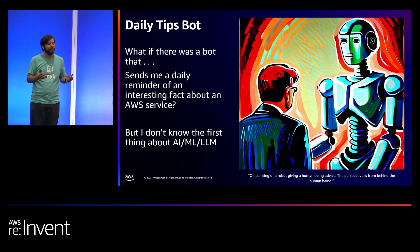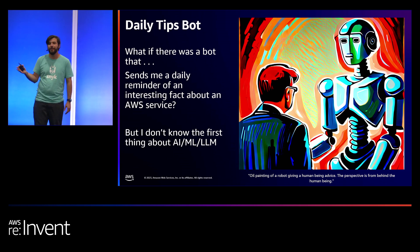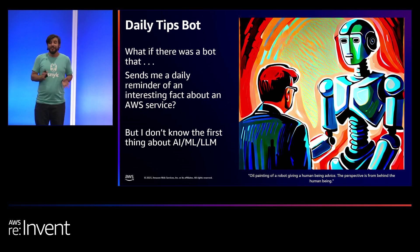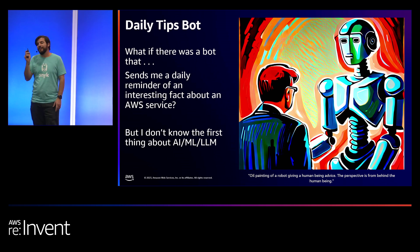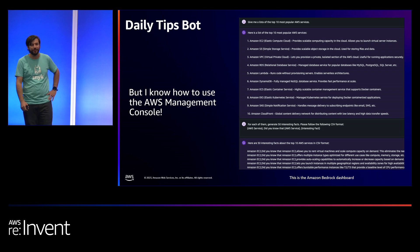I thought, what if there was a bot that sends me a daily reminder of an interesting fact about an AWS service? A daily reminder about an existing AWS service can be helpful — not just for me, but hopefully for the average AWS builder and the community. The challenge though, like I said, is I don't know the first thing about AI. But if there is one thing I know how to do, it's open the AWS dashboard. I went to the AWS dashboard, found the Amazon Bedrock icon, clicked it, and there was a playground where I could enter a prompt and it would answer me back.